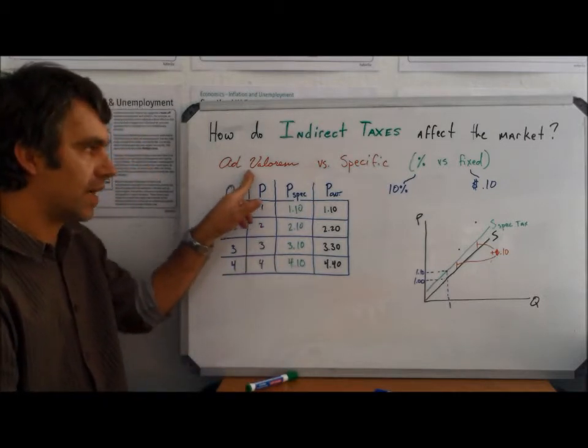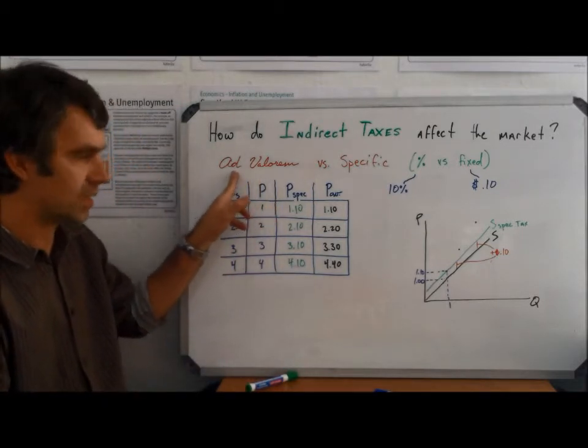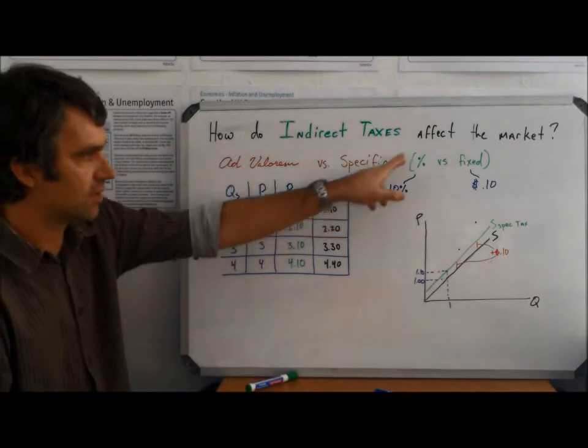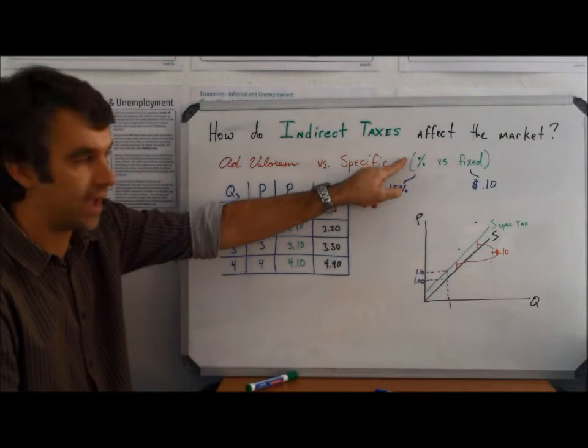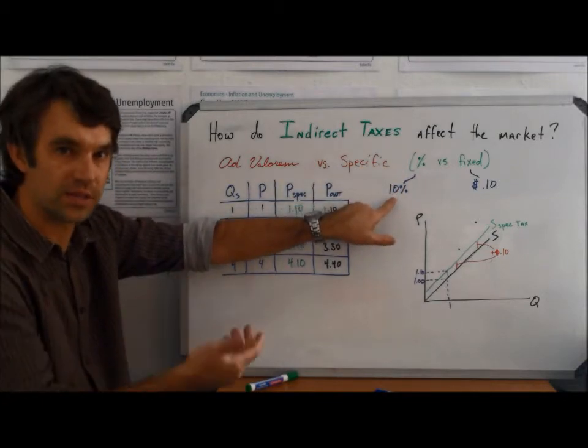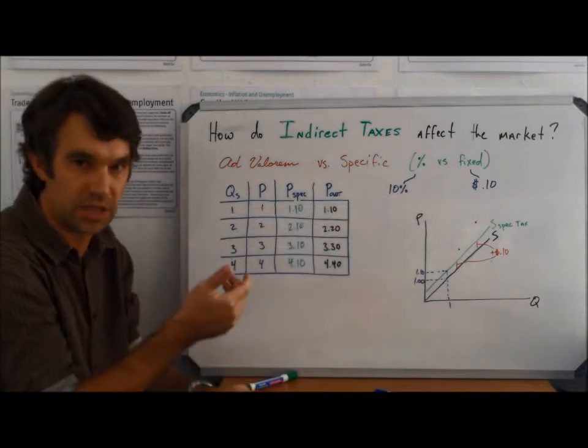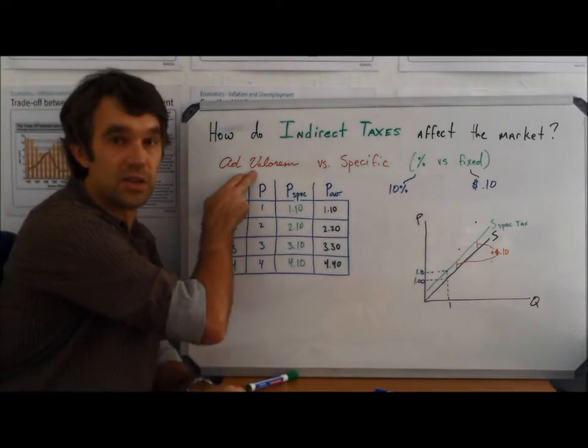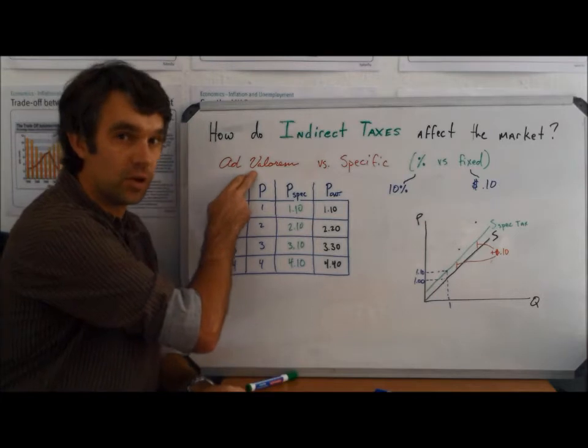Our two types is what's called an ad valorem tax, and that's Latin for adding value, and that is what we call a percentage tax, so it's going to be 10%. So whatever the price is, you then add 10% to that price. Basically, every sales tax in the United States is going to be an ad valorem tax.